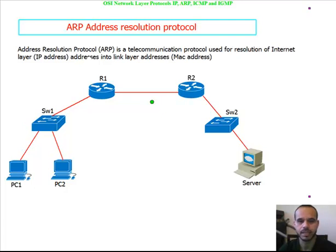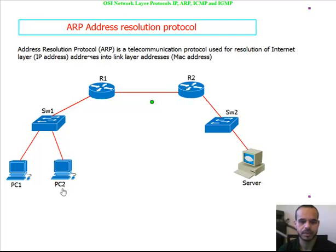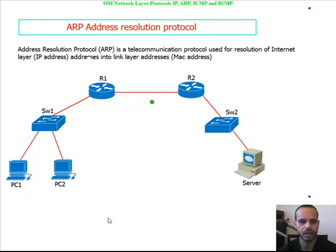ARP stands for Address Resolution Protocol and it's used in the network to translate IP addresses to MAC addresses. We have PC1 and PC2, which represent a local communication on the same network or subnet, and we also have a scenario where a server is located on a different subnet than PC1. What happens if PC1 wants to communicate with PC2?